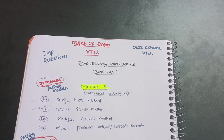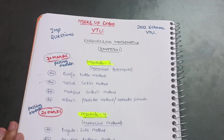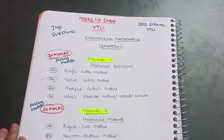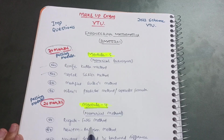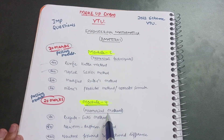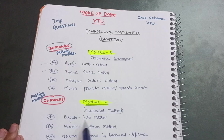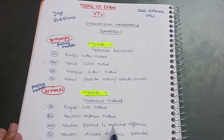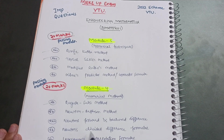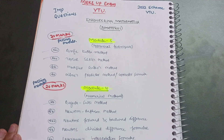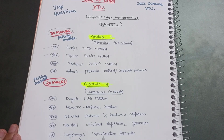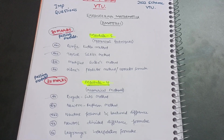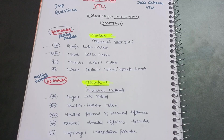Don't lose any marks in Module 5. Then Module 4 comes up — this is also a passing module you should fully focus on. It covers numerical methods again: Regular Falsi method, Newton-Raphson method, Newton's forward and backward difference, Newton's divided difference formula, and Lagrange's interpolation formula. These are the five methods you should cover in Module 4.